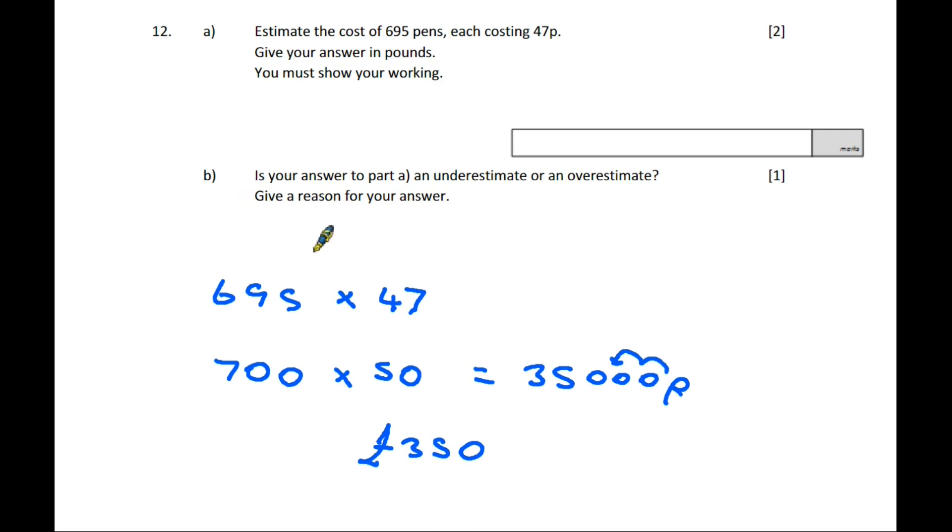Part B asks if your answer is an underestimate or overestimate. It's an overestimate, and the reason is because you've rounded up both the number of pens and the price. In reality, there were slightly fewer pens and a slightly lower price, so the actual price would be lower. You have overestimated.